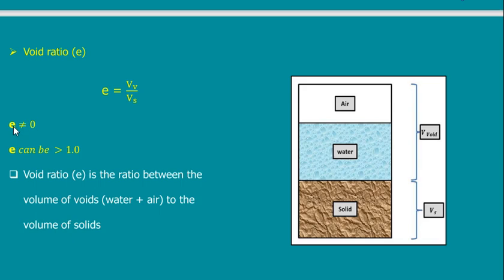Something very important: E cannot be equal to zero. Why? Because it is impossible to have solid soil without voids. Imagine you have balls and you put them in a box — there will always be voids inside because the particles cannot fit perfectly together. They are of different shapes, so they cannot fit together.